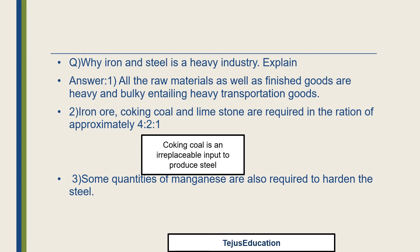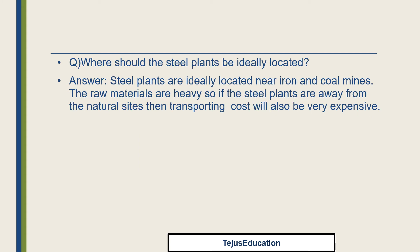Some quantities of manganese are also used to harden the steel. The question of where steel plants should ideally be located: steel plants are ideally located near iron and coal mines. Since raw materials are heavy, if steel plants are far from the natural site, transportation costs will be very expensive.